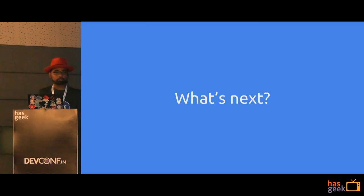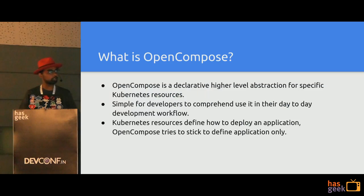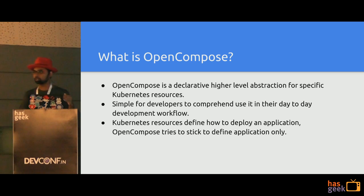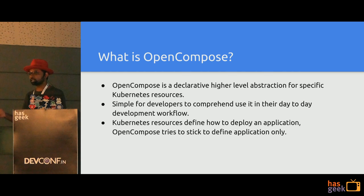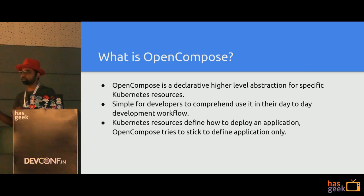That's where OpenCompose comes in. OpenCompose is a spec which is as easy as Docker Compose and native to Kubernetes. All those gaps we found in Docker Compose while mapping to Kubernetes — that's what we're trying to fill out. Things like defining multiple containers in a pod, defining something that should be exposed outside in the form of ingress, defining volume size, and things like that.